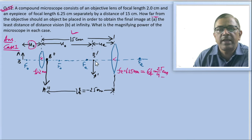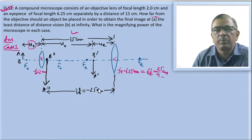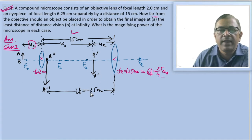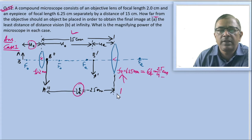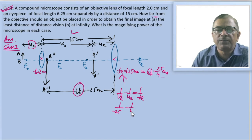For the final image to form at the least distance of distinct vision, A-dash B-dash should be properly placed within the focal length of the eyepiece. We notice that v_e is known and f_e is also known. Using the lens formula for the eyepiece: 1 by v_e minus 1 by u_e equals 1 by f_e. Substituting, 1 by v_e is minus 25 centimeter and u_e is to be found.